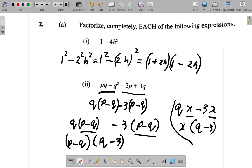So you have p minus q, q minus 3 as the answer. Completely factorized now.